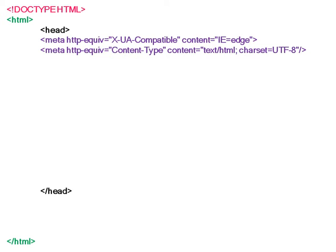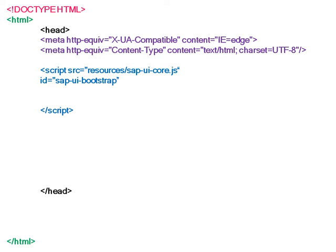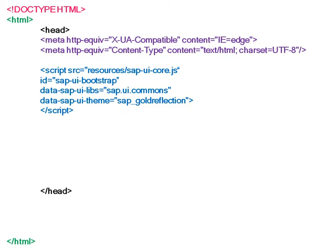The second meta tag is for allowing the characters. In the script section, if you see the resources, SAP UI5 core.js is the default resource for SAP UI5 application development. The bootstrap id and the library — here we mention SAP UI Commons and the theme is Gold Reflection. This entire script section which we have written is called bootstrap.